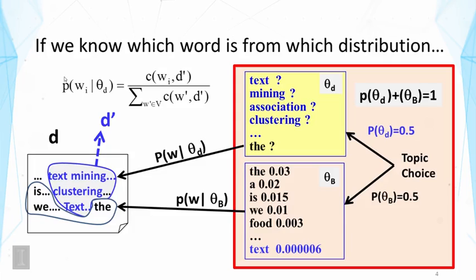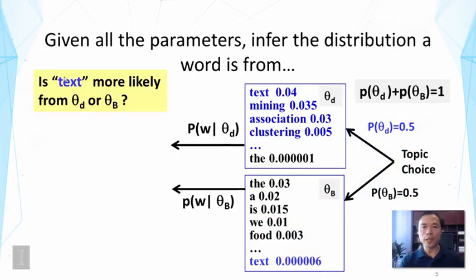Now, this idea doesn't work because we, in practice, don't really know which word is from which distribution. But this gives us the idea of perhaps we can guess which word is from which distribution. Specifically, given all the parameters, can we infer the distribution a word is from?